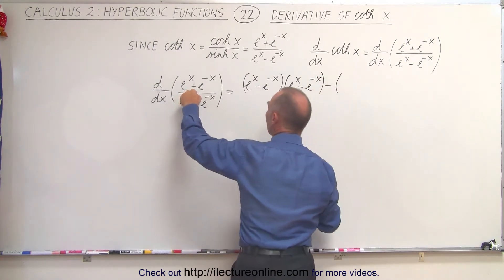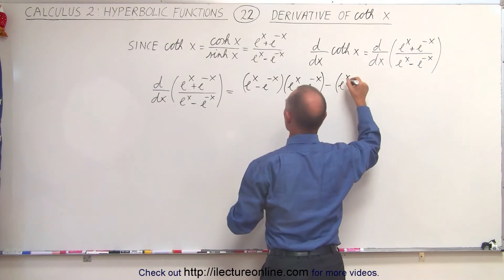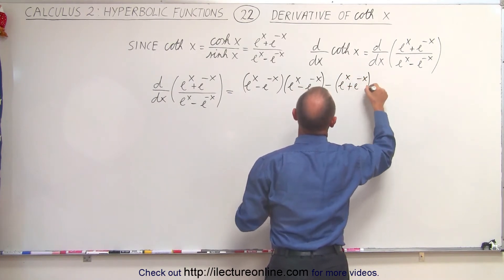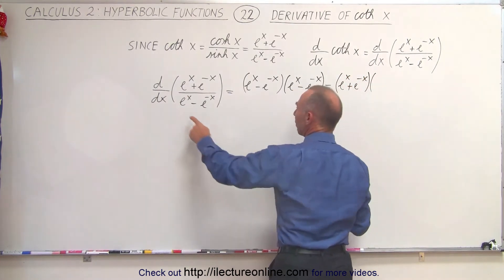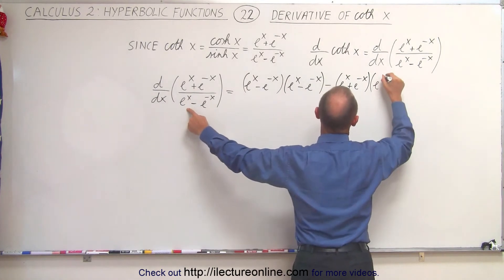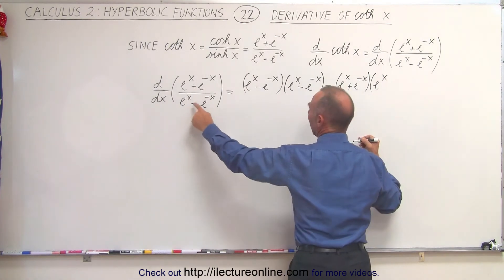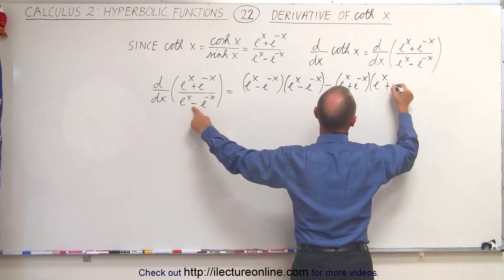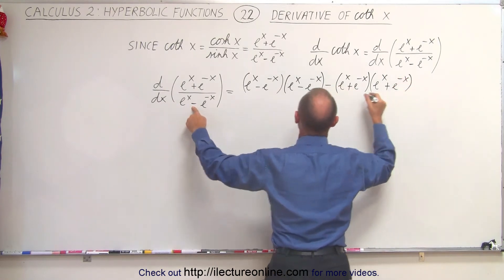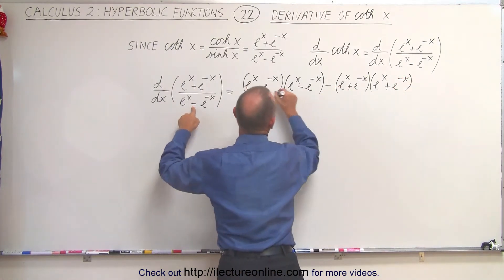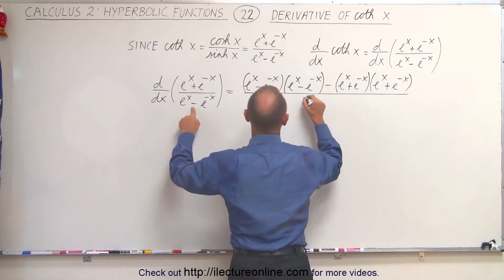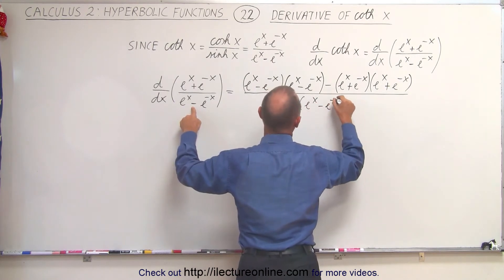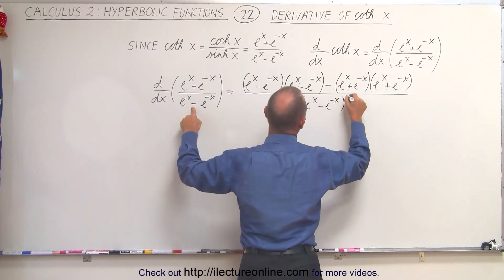Minus the numerator, which is e to the x plus e to the minus x, times the derivative of the denominator, which is e to the x — and this turns into a positive, so plus e to the minus x. All divided by the denominator squared, which is e to the x minus e to the minus x, quantity squared.